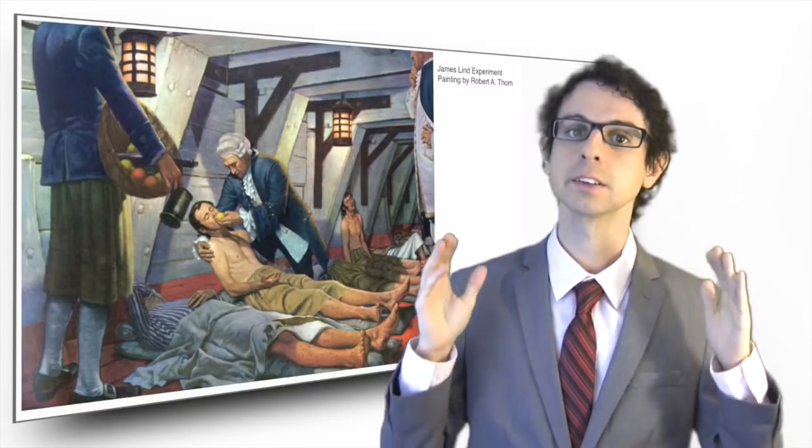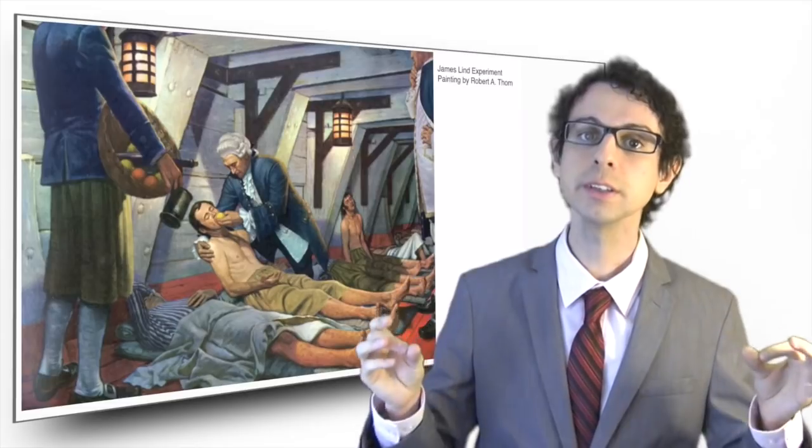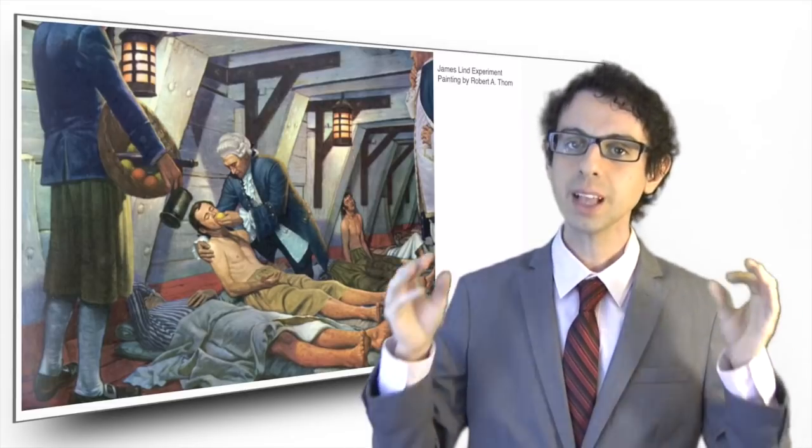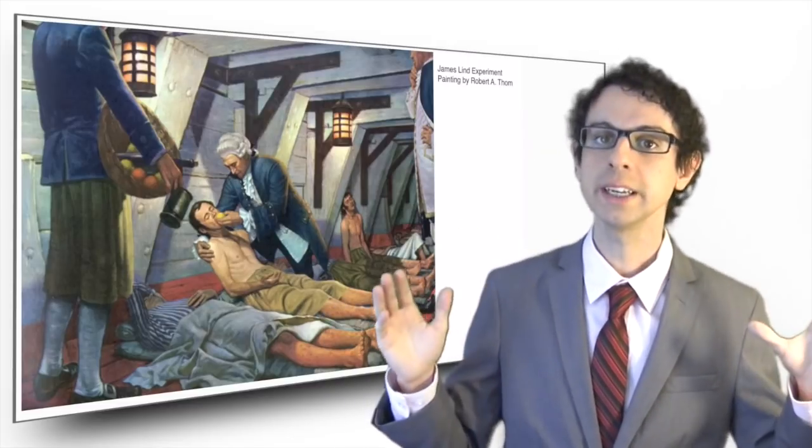Dr. Lind thought that scurvy could be treated by eating acidic foods, and so he recruited 12 sailors affected by scurvy and divided them in six groups of two. They were all eating the same diet, but on top of that, each group received a different acidic food.